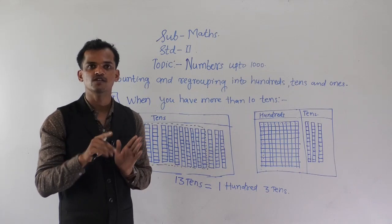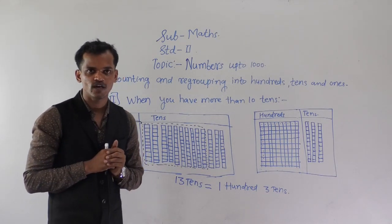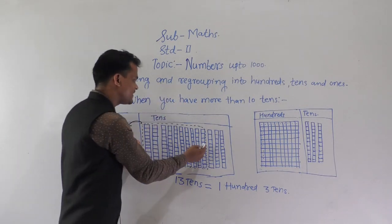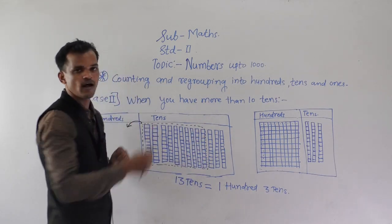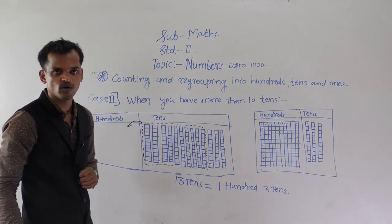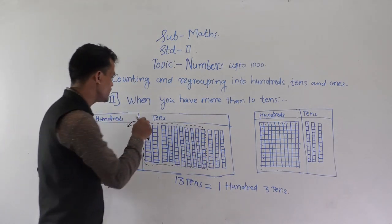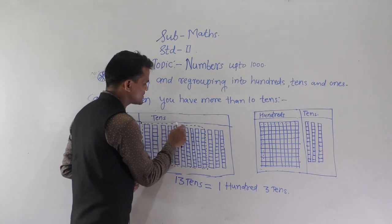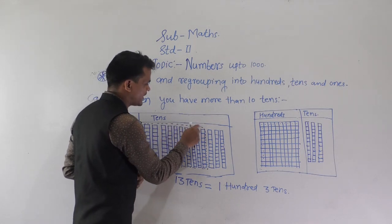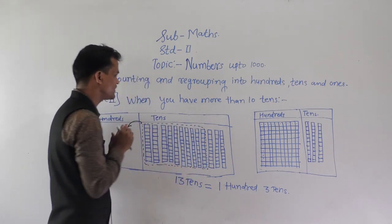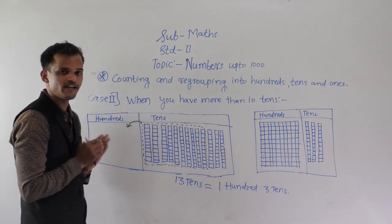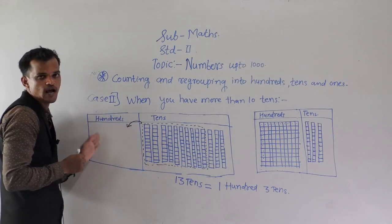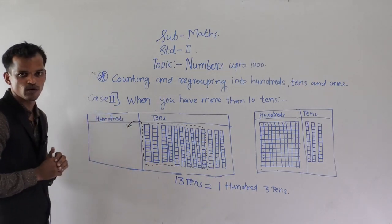10 tens means 1 hundred. So the 10 tens shift into the 100s column. See here: 1, 2, 3, 4, 5, 6, 7, 8, 9, and 10 — all these 10 tens. Now we are going to shift them into the 100s column.